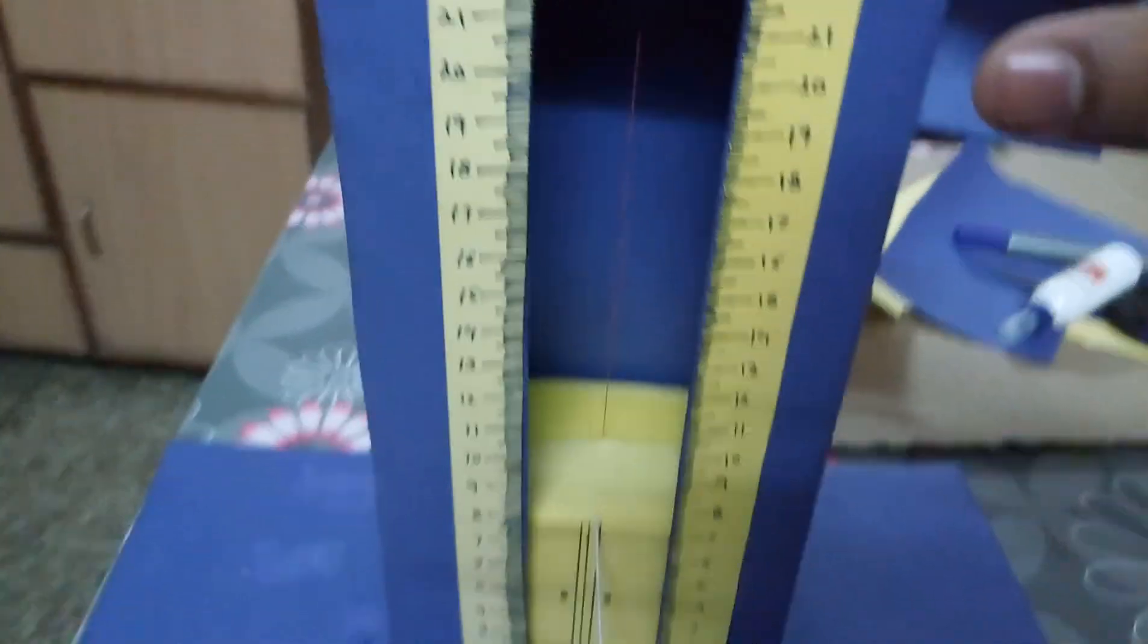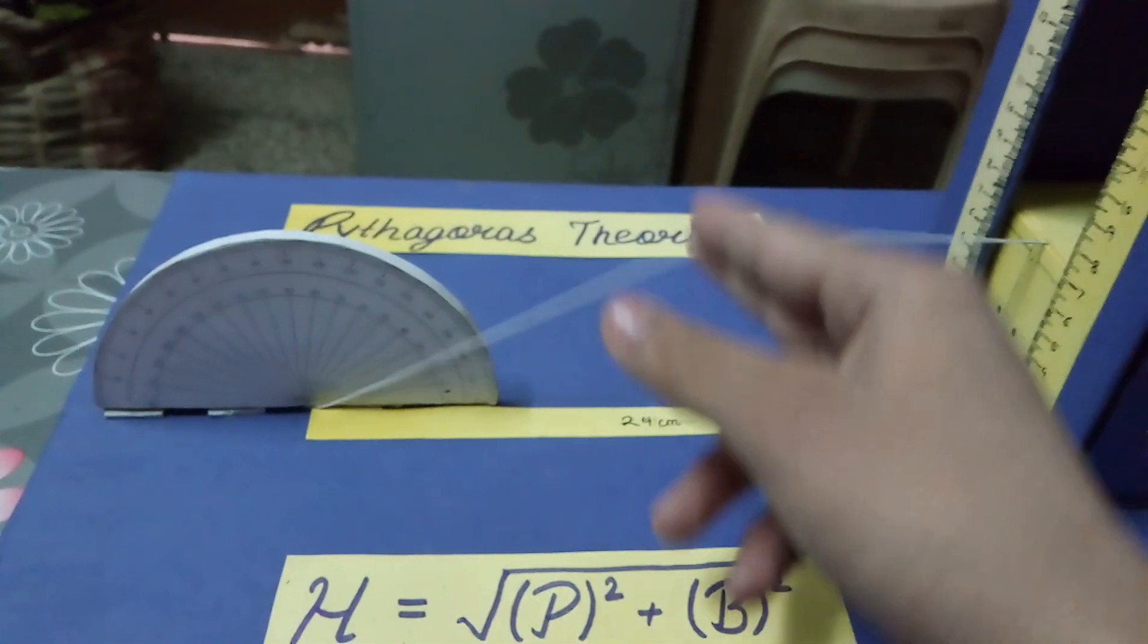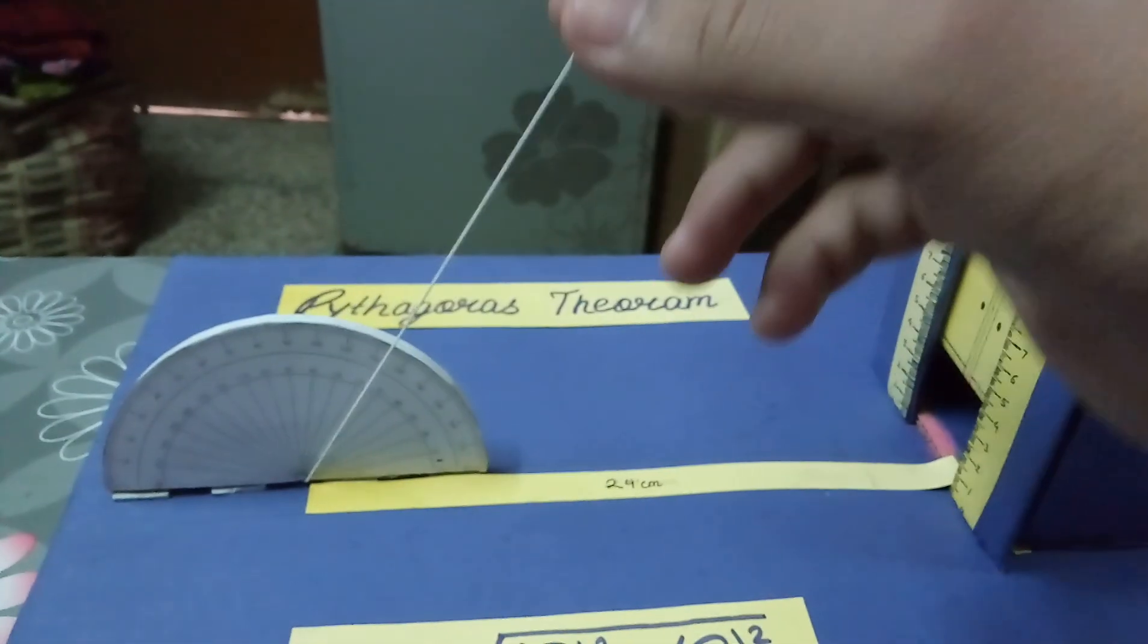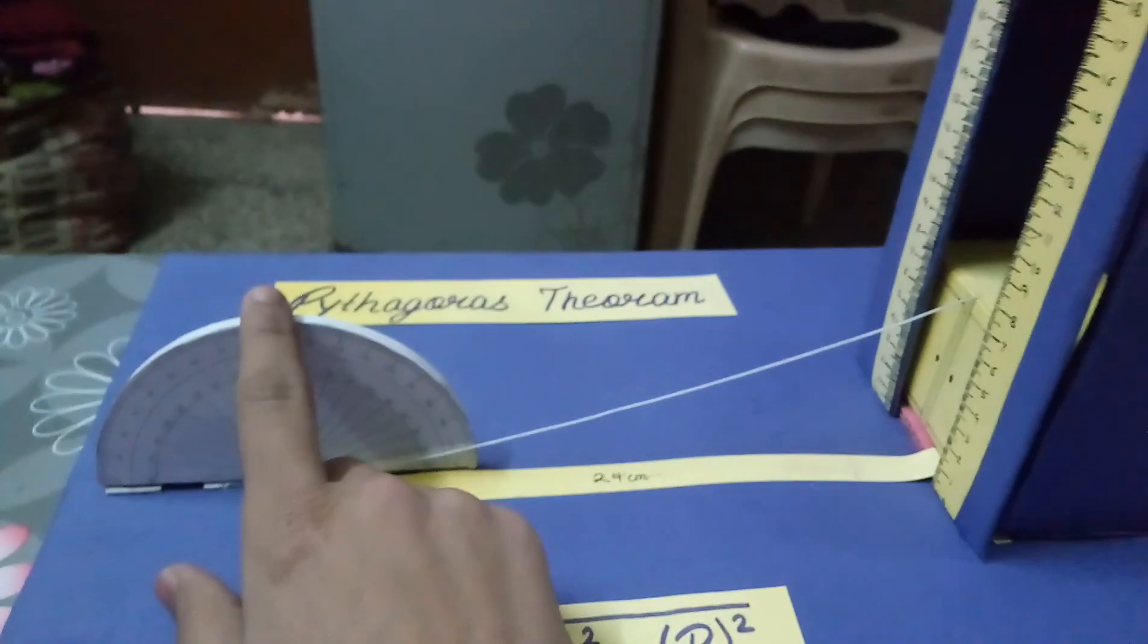Now paste a measuring scale on this lift, as you can see, and connect an elastic wire. As you can see, this wire is elastic. You need to place the elastic wire between the D and your lift.